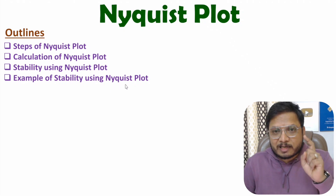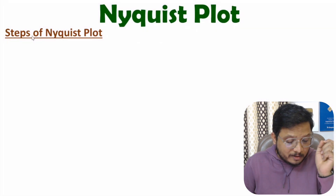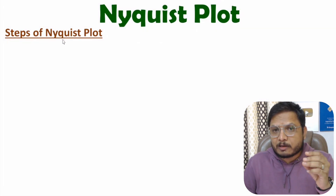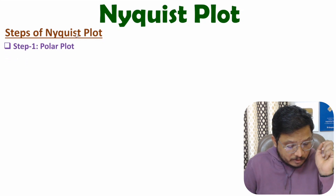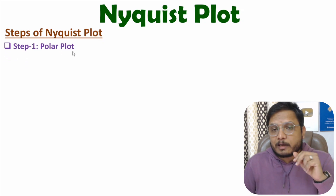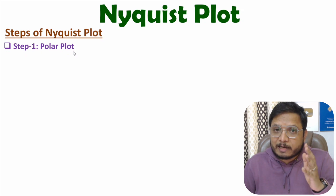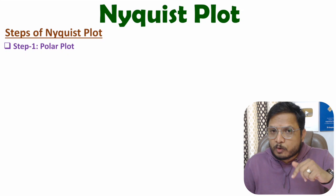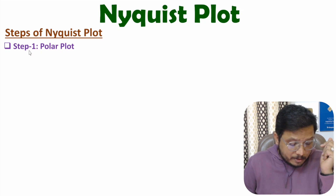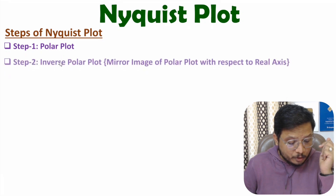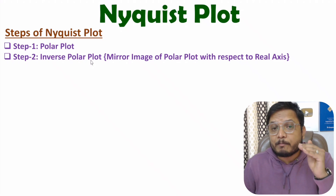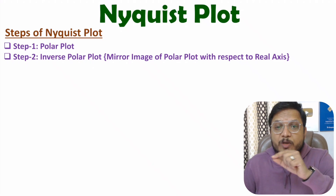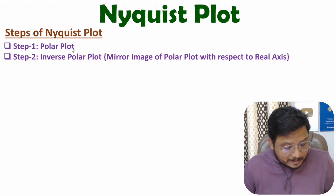Let us start with the first agenda: steps of Nyquist plot. In Nyquist plot we generally follow three steps. In the first step we need to plot the polar plot. In the second step we need to plot the inverse polar plot, which will be the mirror image of the polar plot with respect to the real axis.